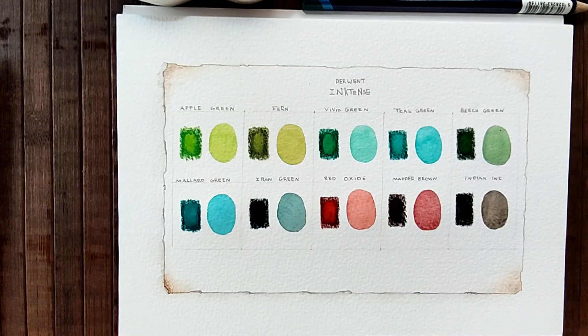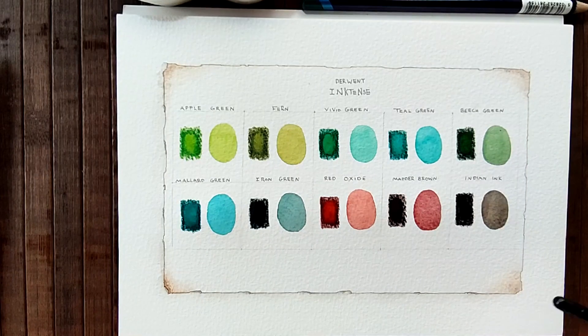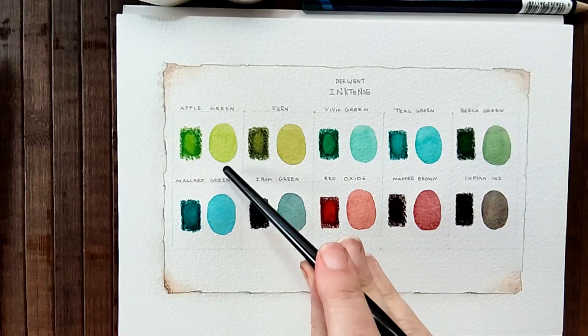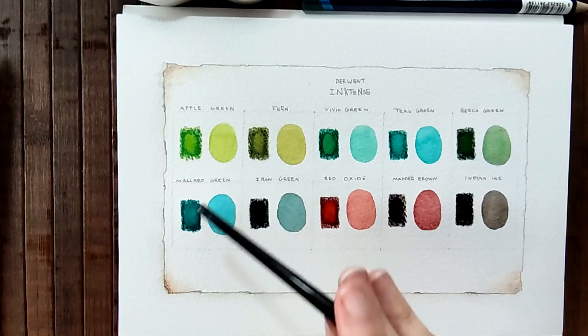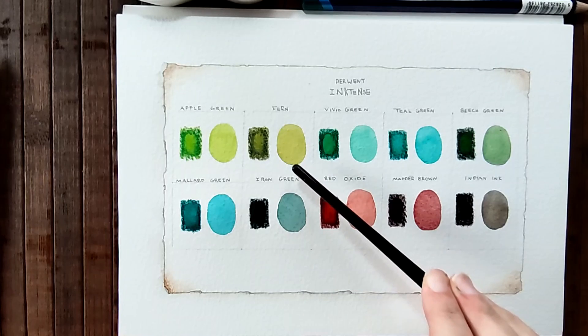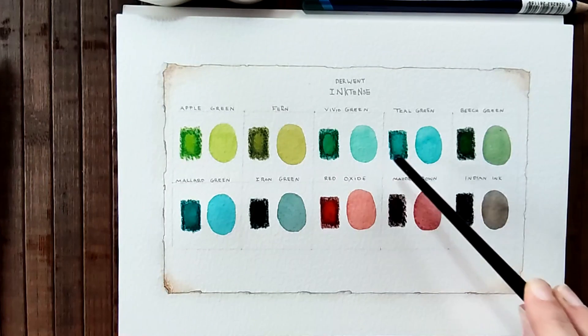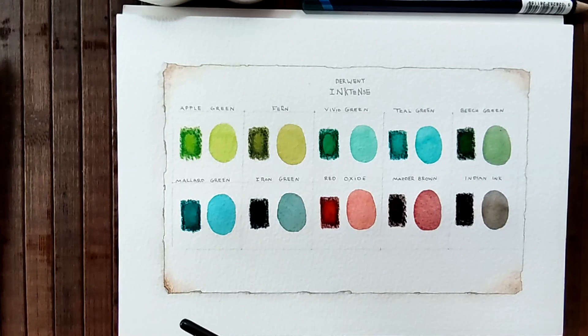Oh, I'm liking them. I'm not one for bright colours. But, I have to say, I can see me using the apple green mixed with something just to give it more warmth. Just to bring it down a notch. Because it is screaming from the page, as is. The fern is beautiful. Vivid green is very pretty. Teal green. I must say, the teal green and the mallard green look quite similar. But this is bluer, I would say. And this leans towards the yellow more.